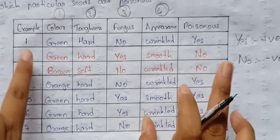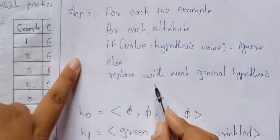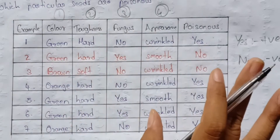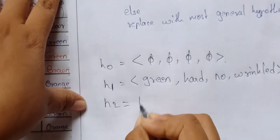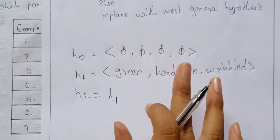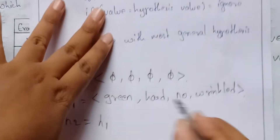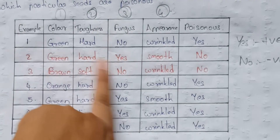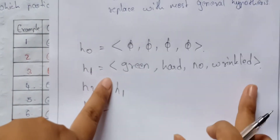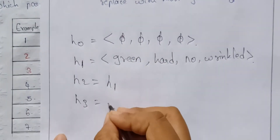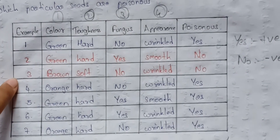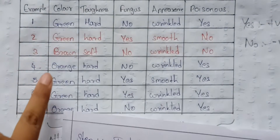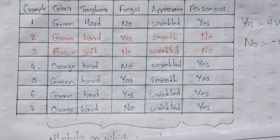Now H2 — is this a positive or negative example? It is a negative example, so we skip it. For each positive example we consider it; negative examples we ignore. H3 is also a negative example, so we skip it. H4 is a positive example, so now we check each attribute value against the current hypothesis.